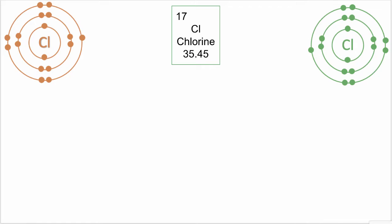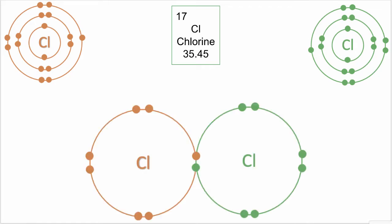This allows for both atoms to complete their outer shell. This shared pair of electrons is what we call a covalent bond and it is often represented by one solid line which you can see in this diagram here.